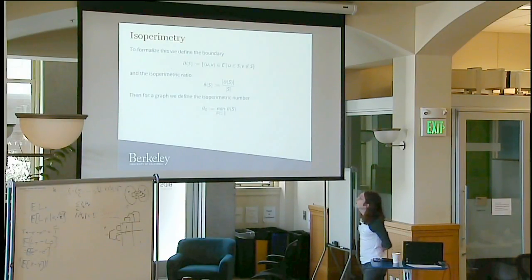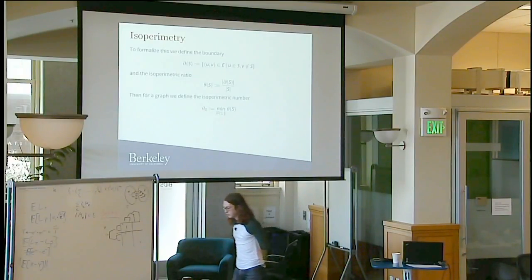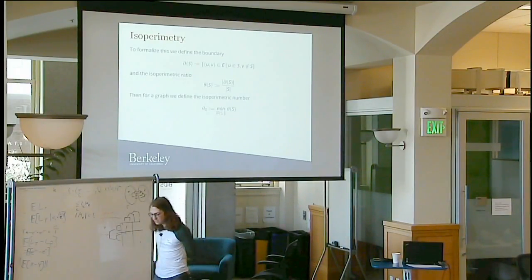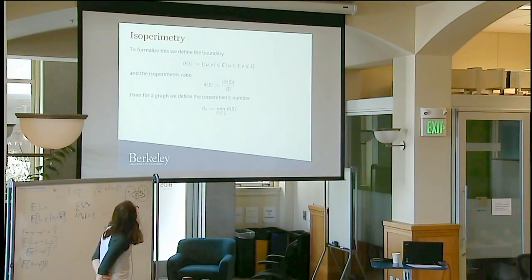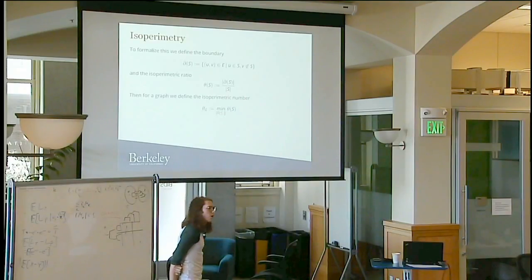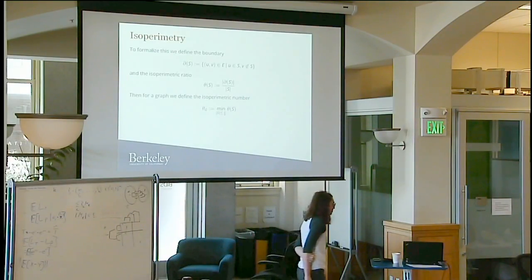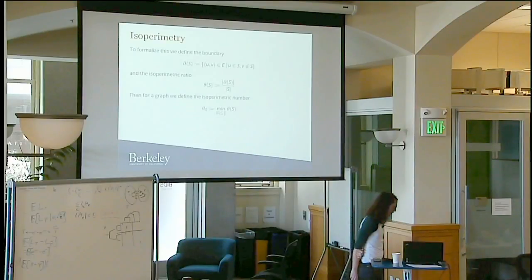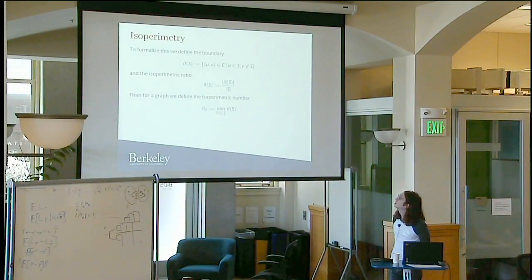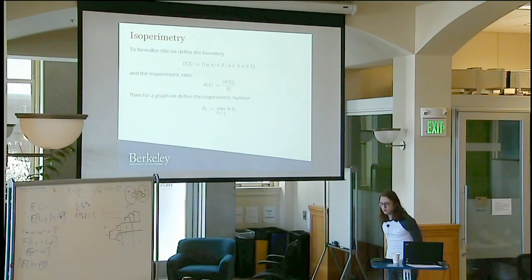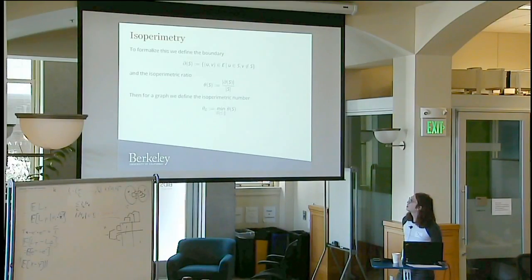So let's formalize this. Given a subset of the vertices of a graph, I define the boundary to be all of the edges leaving the subset. Then the isoparametric ratio is the ratio of the boundary size to the size of the subset. We're only interested in looking at subsets smaller than half the size of the graph. For a graph, if we're trying to find some ideal way of cutting the graph into two clusters, we're going to be interested in this isoparametric number, which is the minimum of the isoparametric ratio over all subsets of appropriate size.